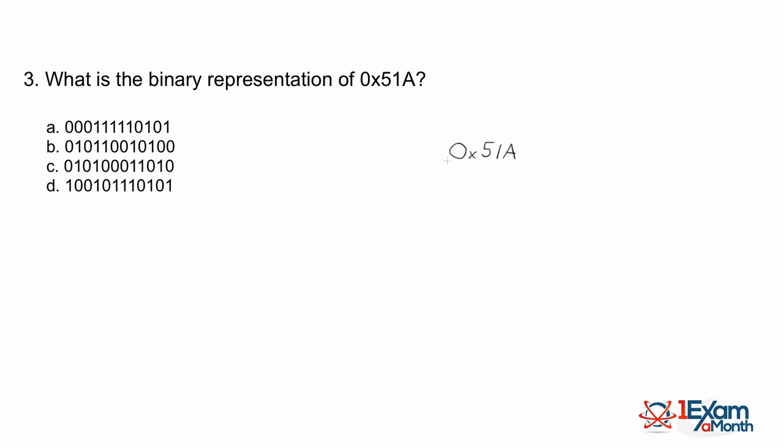First, when you see '0x' at the front of a number, don't worry about converting that — it's simply indicating that this is a hexadecimal number. We have three hexadecimal digits here: a 5, a 1, and an A. What's up with the A? Hexadecimal is a base-16 numbering system, so it uses numbers 0 through 15. When we get to 10, instead of writing '10' we use a letter.